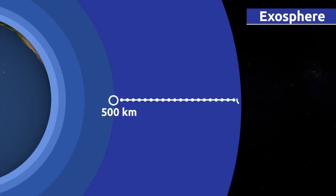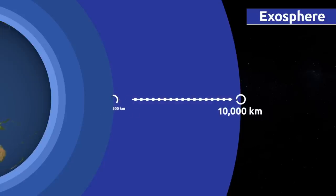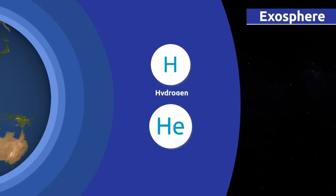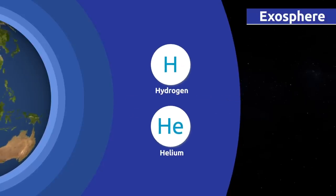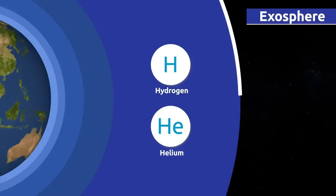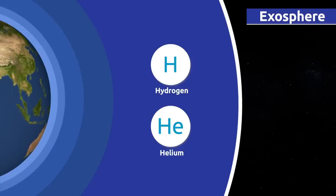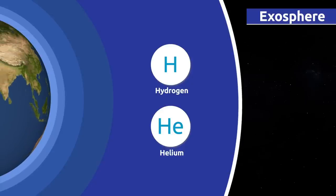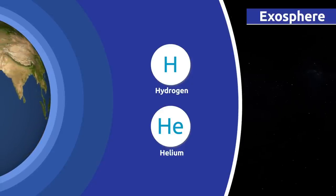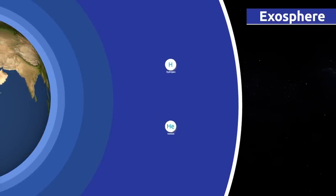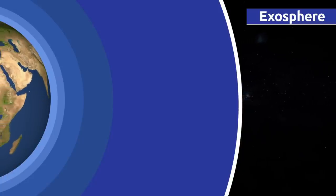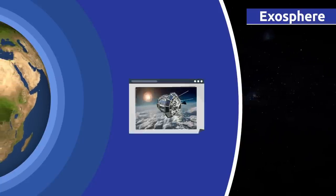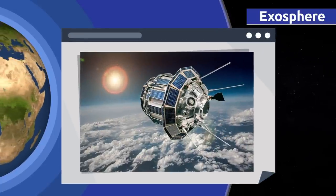The exosphere is the most distant layer from the earth's surface, extending to an altitude of approximately 500 to 10,000 kilometers above sea level. Air in the exosphere is very thin — there's nothing but hydrogen and helium there. This layer is our outermost limit with space and protects us from solar flares. Satellites orbit the earth within the exosphere.